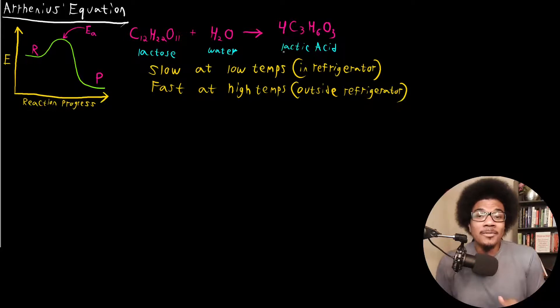That process that allows the milk to spoil happens a lot faster when it's outside the refrigerator versus when it's inside those refrigerated temperatures. So that gives us kind of a basis, a little bit of an intuitive understanding of the fact that this is the same exact process, but it's happening much faster at higher temperatures than it does at lower temperatures. We know that there's an inherent dependence with respect to temperature on our reaction rates.